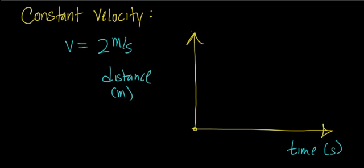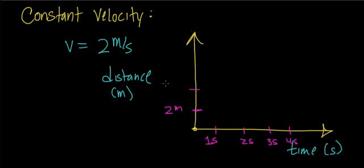So this point right here would be 1 second, 2 seconds, 3 seconds, 4 seconds, and so on. And on this axis, I'm going to choose units of 2 meters. So this would be 2, this would be 4 meters, this would be 6 meters, and so on.